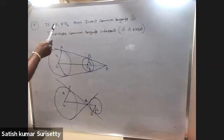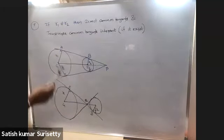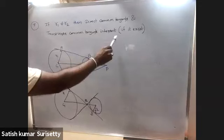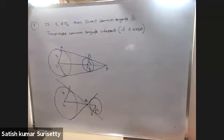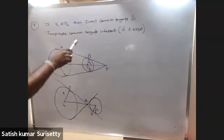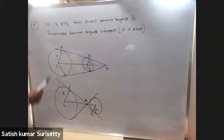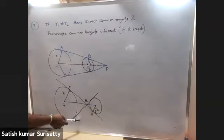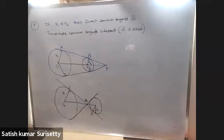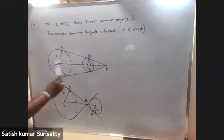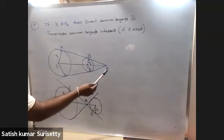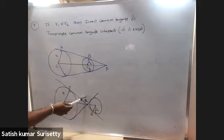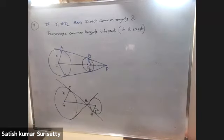If the radii of two circles are different, the direct common tangents intersect each other at a point P, and the transverse common tangents also intersect each other at a point Q (when they exist). From the figure, triangle PAC1 is similar to triangle PBC2, so PC1/PC2 = R1/R2. That is, the point of intersection P of the direct common tangents divides the line segment C1C2 externally in the ratio R1 : R2. Similarly, the point of intersection Q of the transverse common tangents divides C1C2 internally in the ratio R1 : R2.